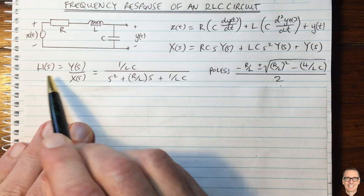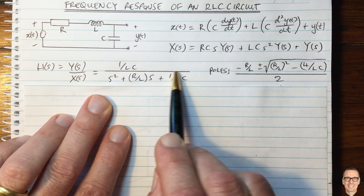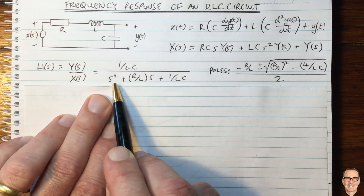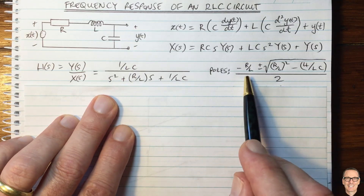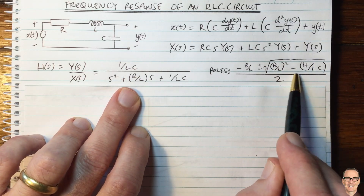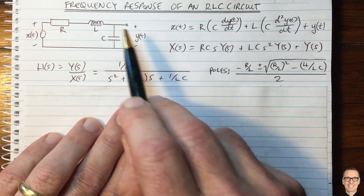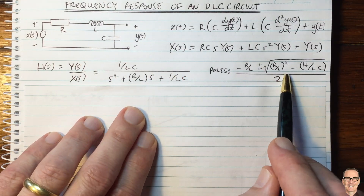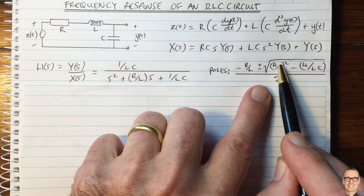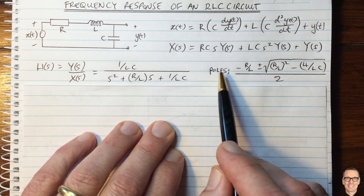We now have an equation for the system response H(S). The denominator contains S squared and S terms, giving a quadratic. We find the poles by setting the denominator equal to zero using the quadratic formula: minus B, plus or minus the square root of B squared minus 4AC, all divided by 2A. There are two scenarios depending on the sign of the term inside the square root — if negative, we get complex poles; if positive, we get real poles.